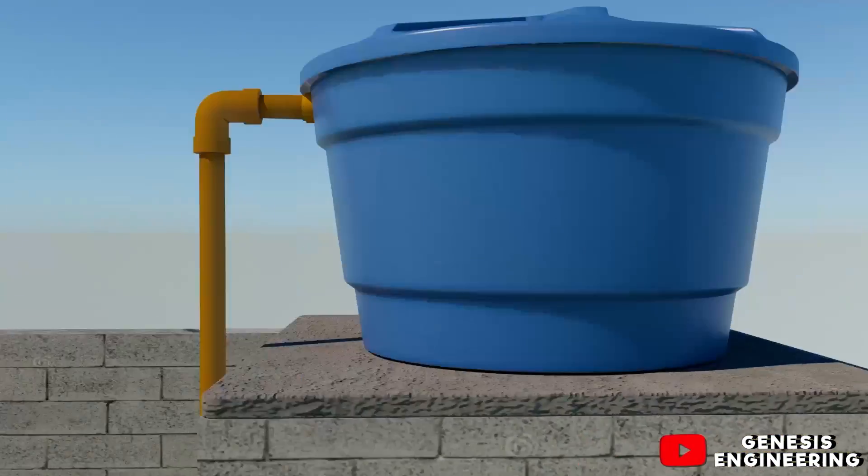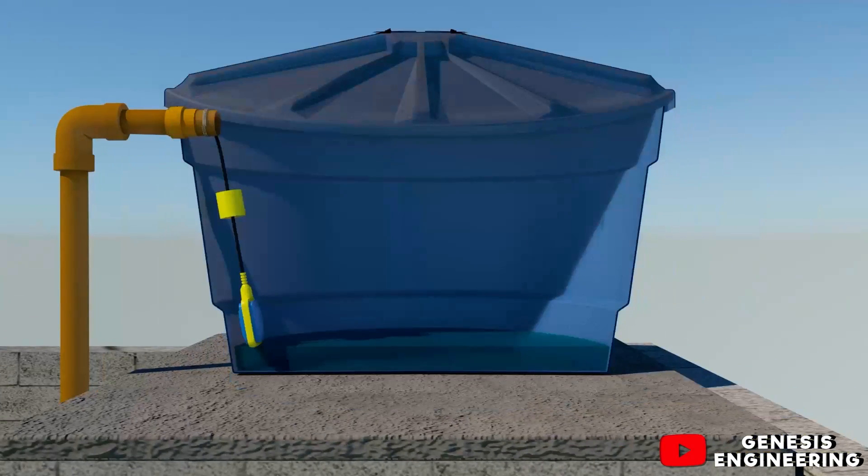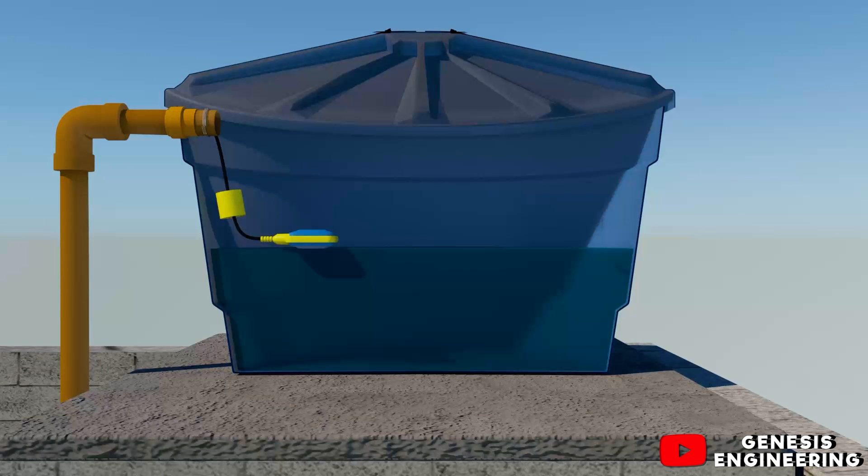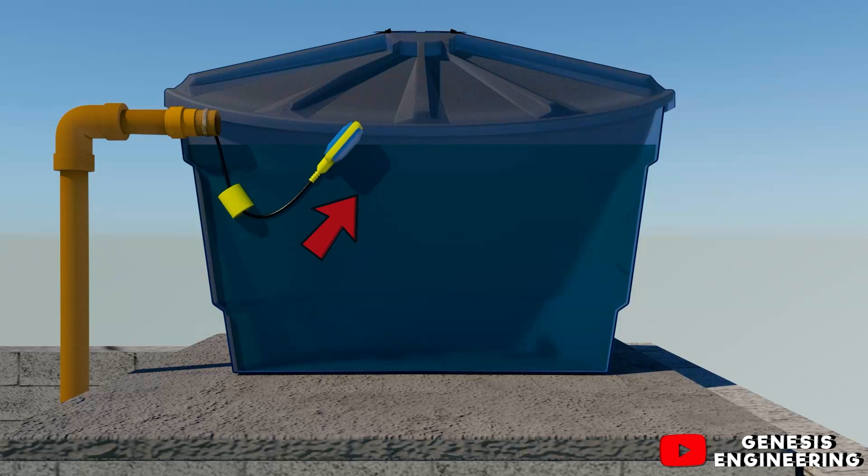Inside the water tank the float switch will work as follows. When the water tank is empty the float switch will be positioned down and the pump will be on filling the tank. When the water tank is full the counterweight will be down forcing the float switch to the up position and the pump will shut off automatically.